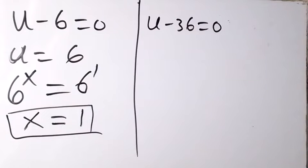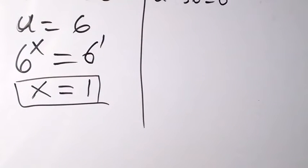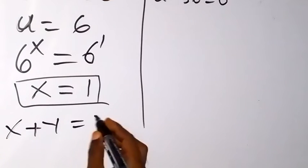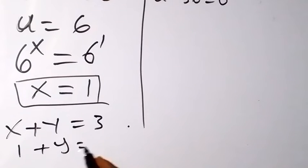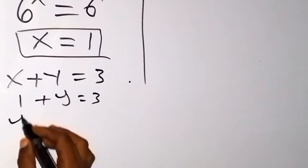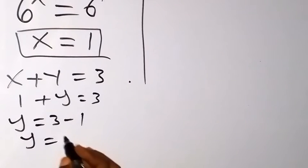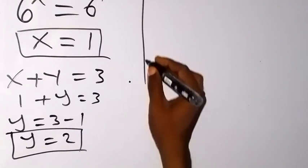With x equals 1, we find the corresponding value of y from equation 2, which is x plus y equals 3. Substituting x equals 1: 1 plus y equals 3, so y equals 3 minus 1, which gives y equals 2. So when x equals 1, y equals 2.